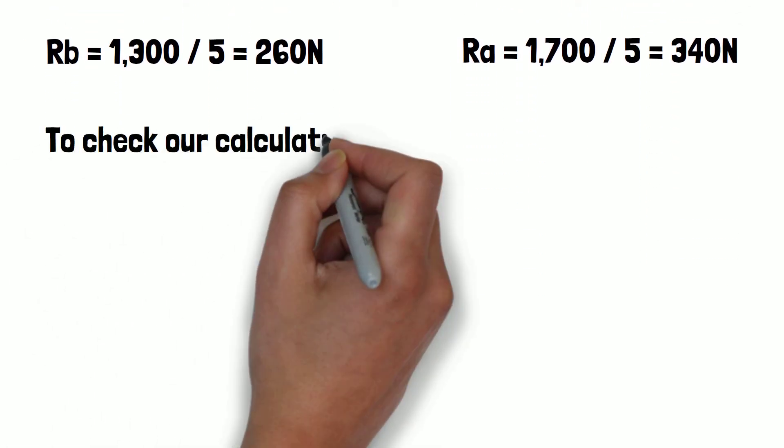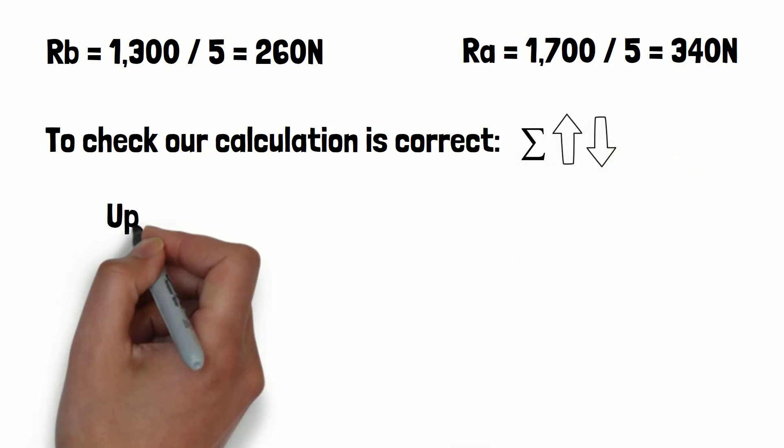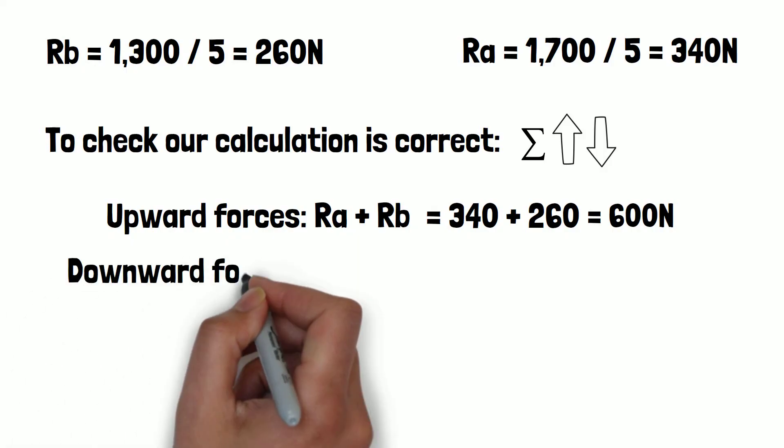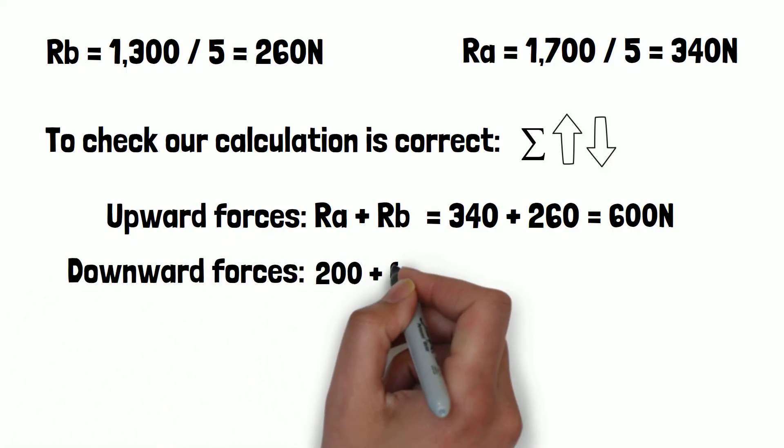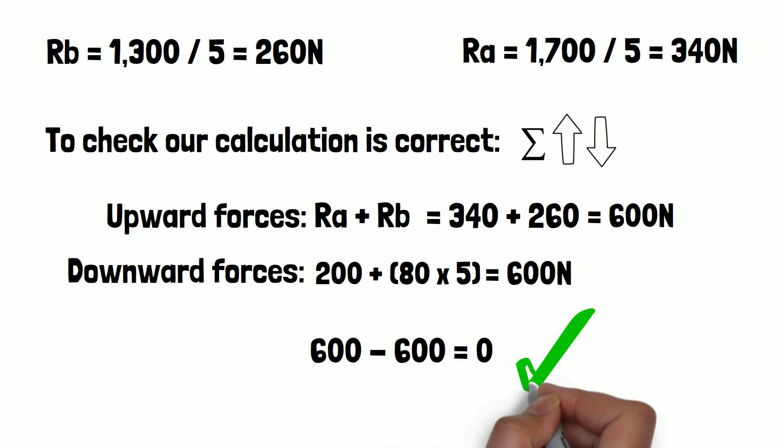To check our calculation is correct, we can sum the vertical forces up and down. The sum of the upward forces RA plus RB is 340 plus 260, which equals 600N. The sum of the forces applied in the downward direction is 200 plus 80 times 5, which equals 600N. Since the sum of the upwards and downwards forces cancel out to 0, our calculation is correct.